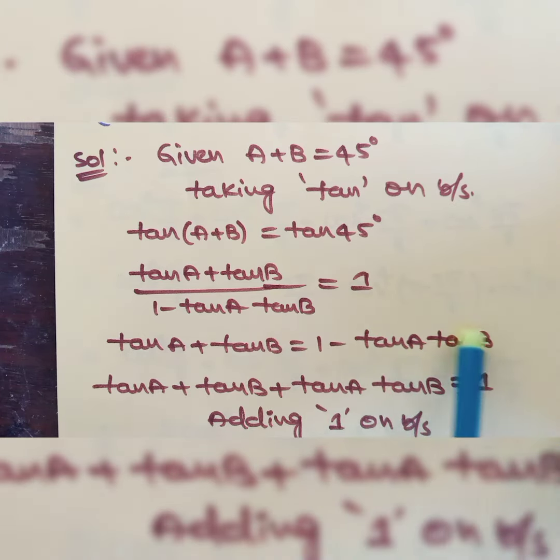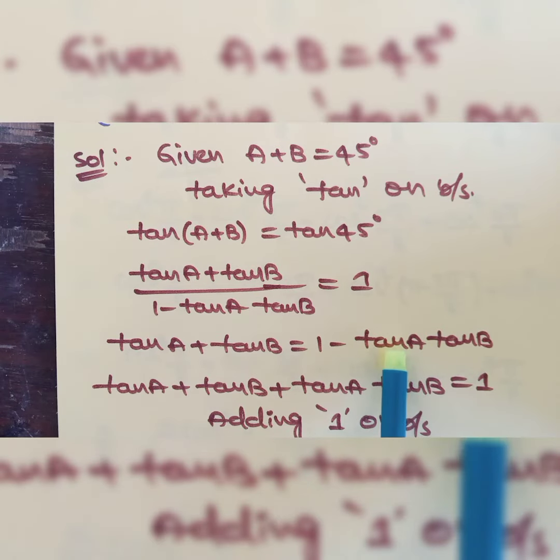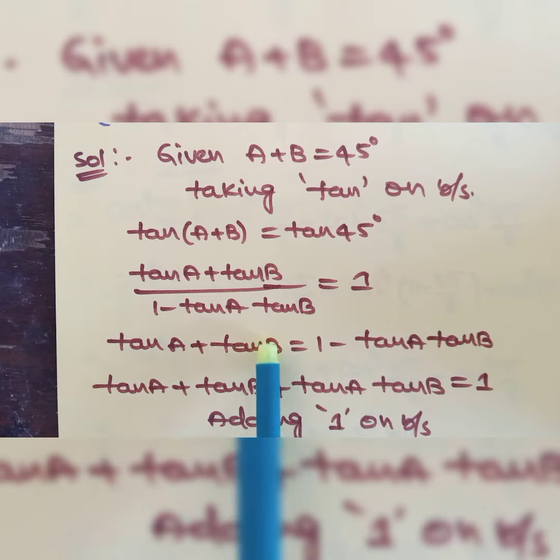This tan A tan B is negative. When you shift it from RHS to LHS, the sign will be changed from negative to positive. Then, tan A plus tan B plus tan A tan B is equal to 1.